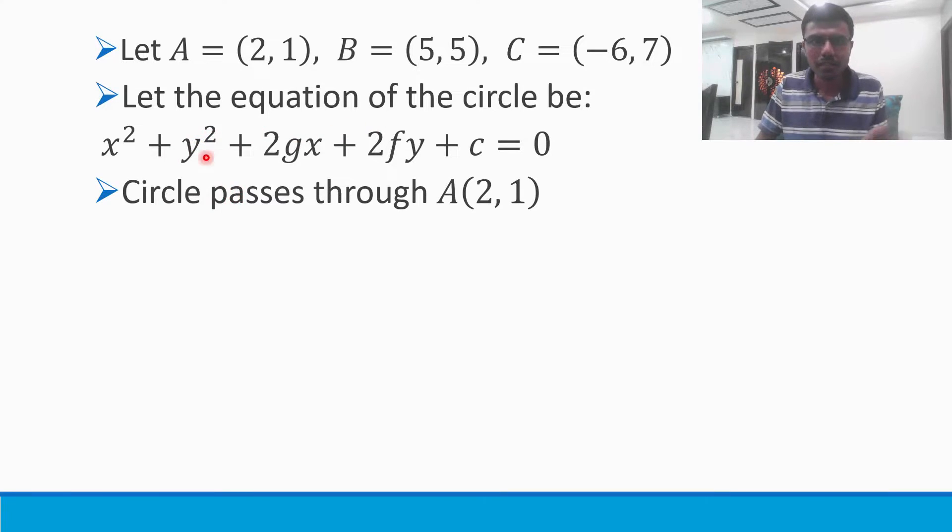As I already mentioned, the circle passes through this point, that means this point lies on the circle. That means this point will satisfy the above equation x² + y² + 2gx + 2fy + c = 0. So just substitute (2, 1) in this equation.